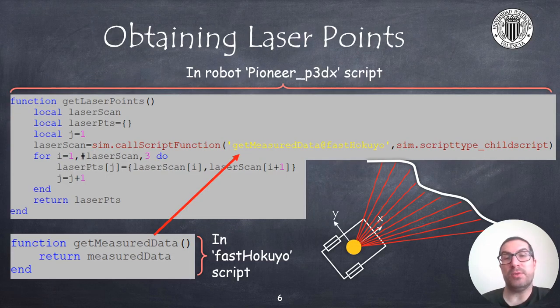In order to access the laser sensor data, we need to implement the getMeasuredData function in the code script associated with the laser sensor. So there's a script associated with the laser sensor, and we need to access this script. This function just simply returns an internal variable with the x, y, and z data points of the laser sensor.